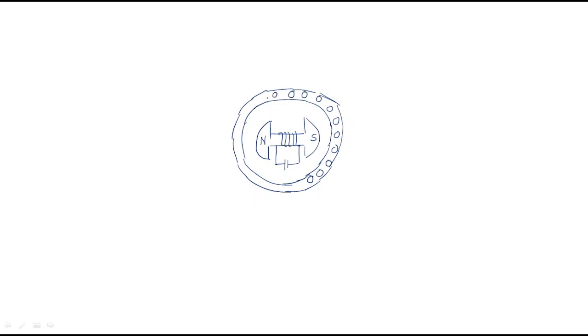The another part of the construction is the armature. The armature is the stator part. The armature consists of armature slots, and in these armature slots we use the winding, that is the armature winding. The armature winding is generally a three-phase winding, and three-phase AC supply is given to this armature.